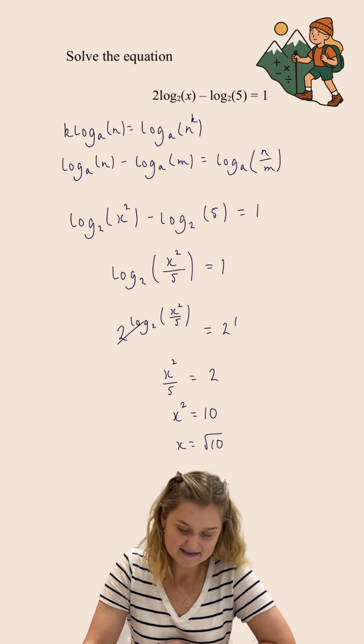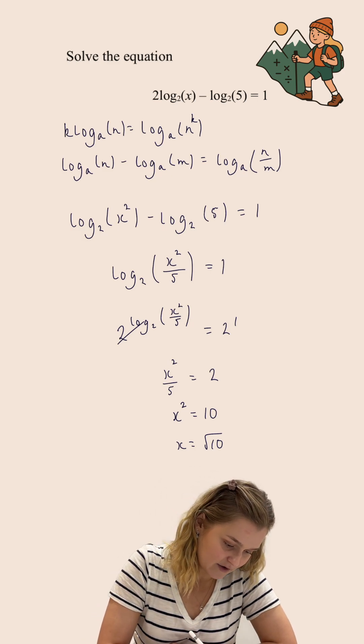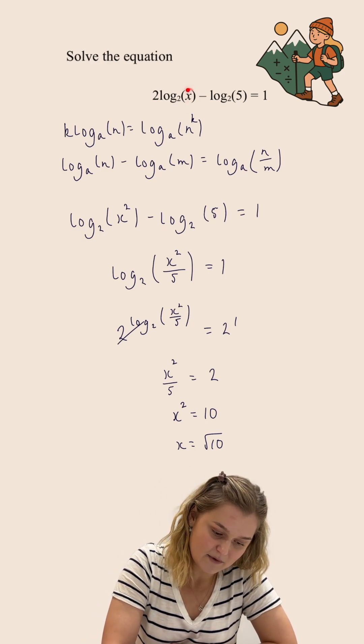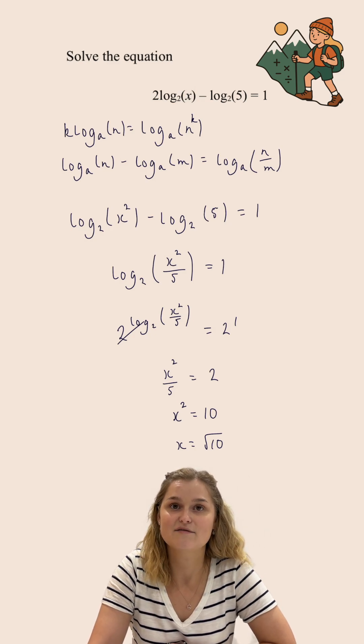Now the reason I'm not writing x equals plus or minus the square root of 10 is because I cannot put a negative into a logarithm like this. And so it cannot possibly be negative root 10.